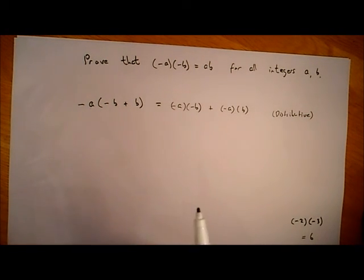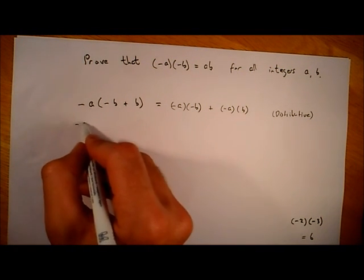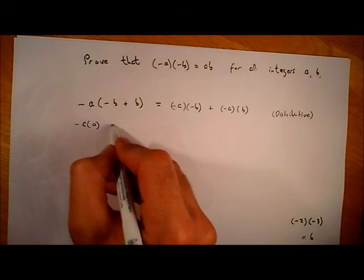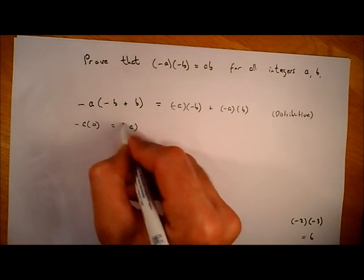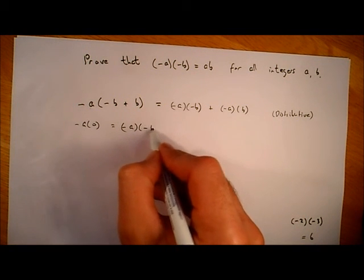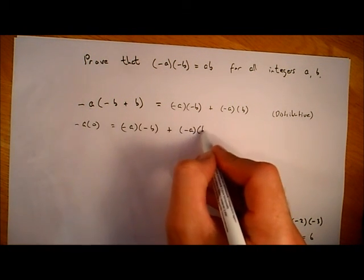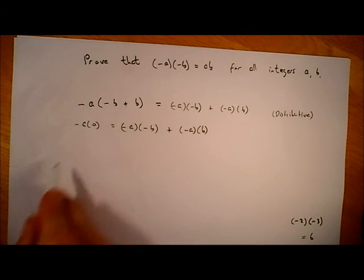So minus b plus b will give me zero, so this over here is minus a times zero is equal to minus a by minus b plus minus a times b. But anything times zero, we've proven that in a previous video, anything times zero is zero.